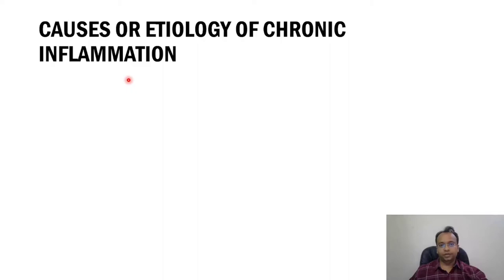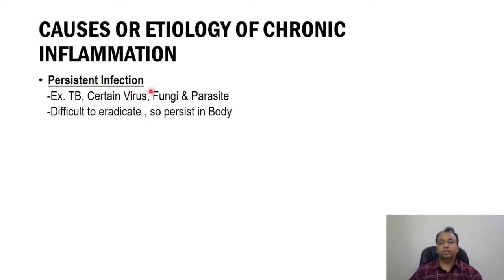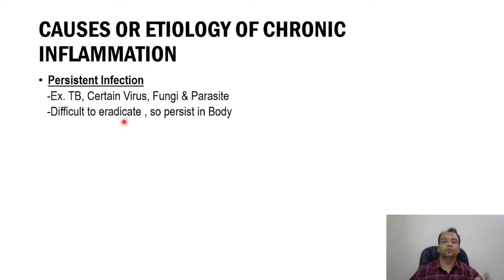The main etiology is persistent infection. For example, tubercle bacilli, certain viruses, certain fungi, and parasites will persist in the body, leading to chronic inflammation which is difficult to eradicate. Body immunity cannot remove them, and that's why they persist in the body and lead to chronic inflammation.